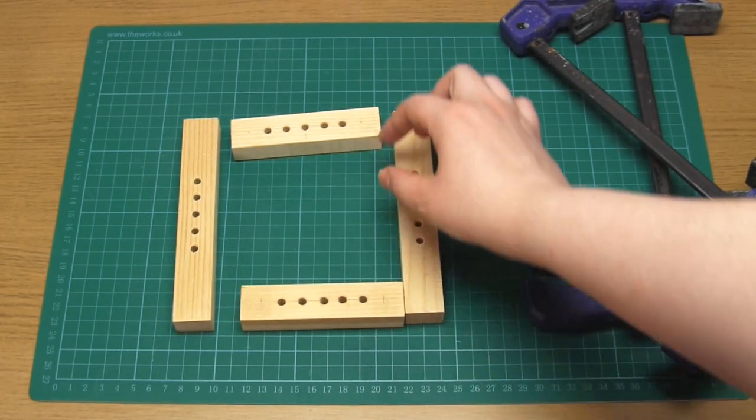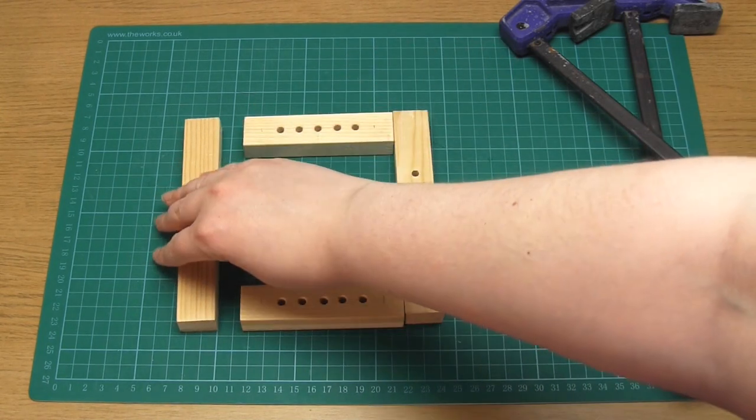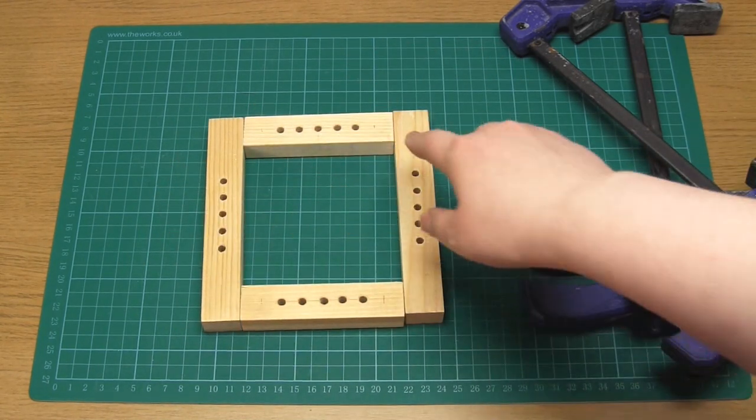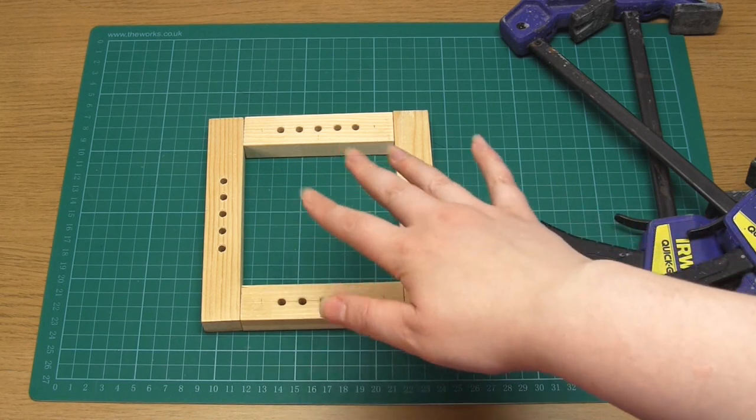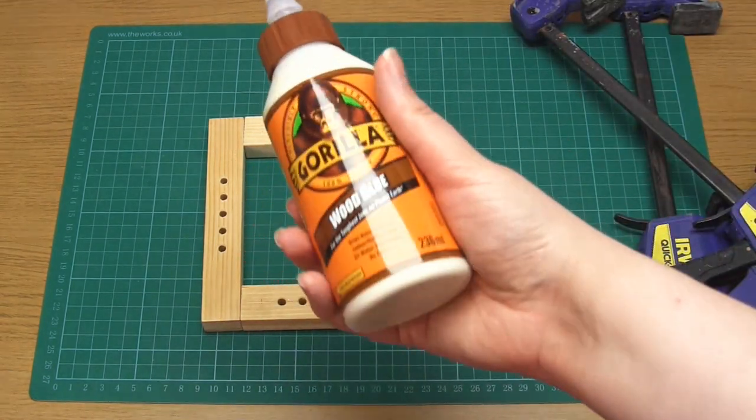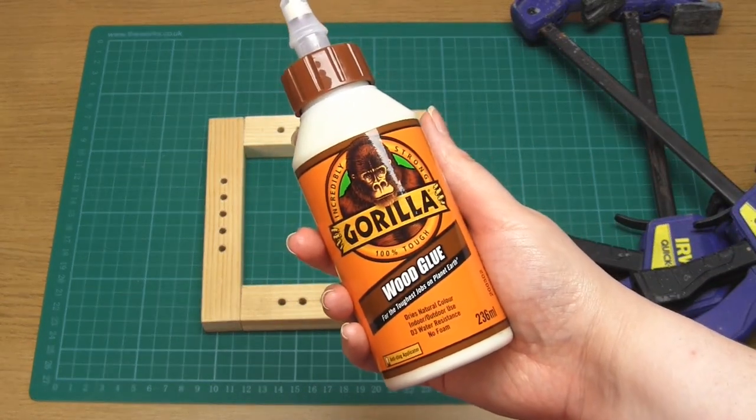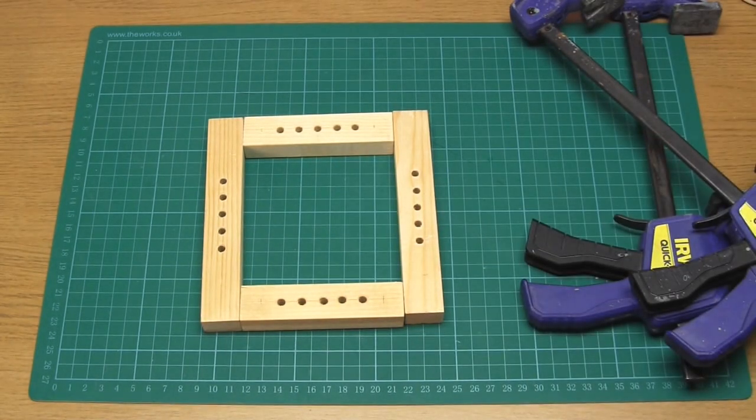I used a five millimeter drill bit to drill five holes in the center of each strip and I placed them half an inch apart. How big and how far apart the holes are depends on the width of the cane that you're using.